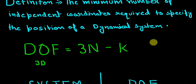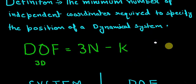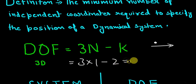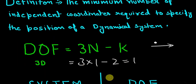For example, a particle moving in three-dimensional space where it cannot move in the y-axis and z-axis — it can only move in the x-axis. Its degree of freedom will be three into one particle minus two restrictions, giving one degree of freedom, that is only in the x-axis.